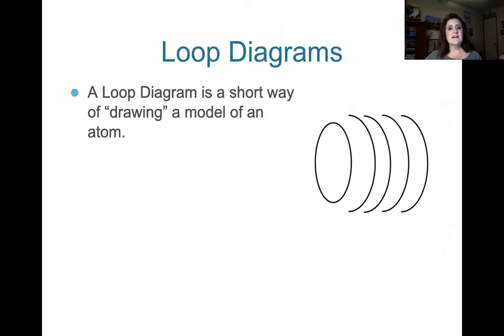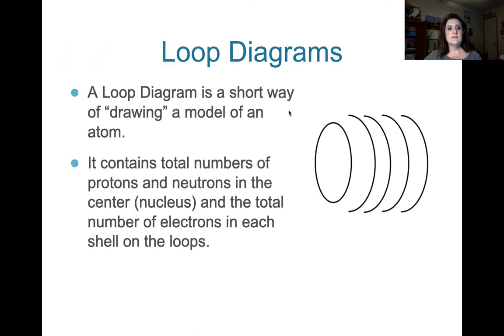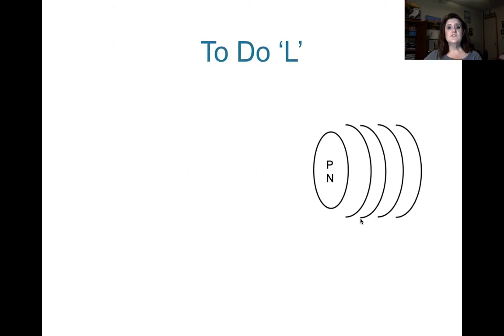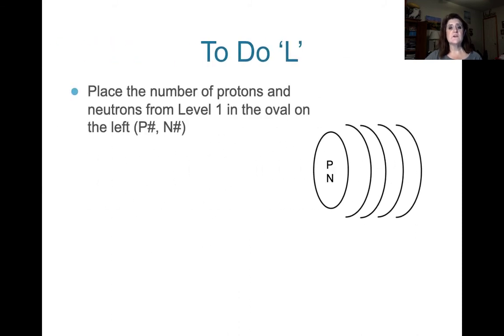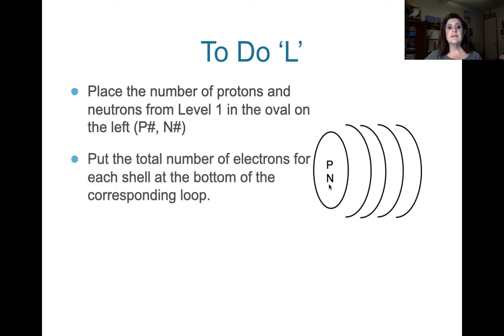The loop diagram looks kind of like a modified sound wave. It's a shorter way of drawing the model of an atom. You get protons and neutrons in the nucleus and then the total number of electrons per shell, as if they were all squished in there together. To do the loop diagram, you place the protons and neutrons from level 1 in the nucleus. And again, we'll have P and a number and N and a number. And then you put the total number of electrons on each shell at the bottom of its corresponding loop. So the loops are numbered from left to right from the nucleus.